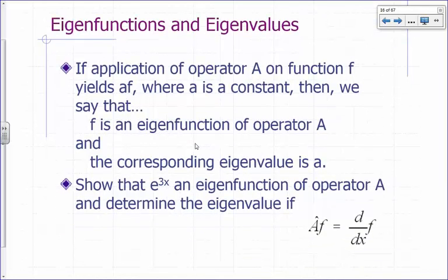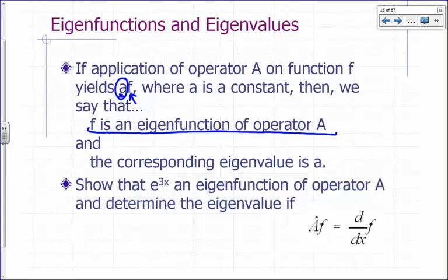Let's move on to eigenfunctions and eigenvalues. If the application of operator A on a function F yields a constant times the original function, then we say that this function F is an eigenfunction of operator A. This constant that comes out is called the eigenvalue corresponding to that eigenfunction. So for every eigenfunction, there's a corresponding number called the eigenvalue — the number that comes out when you operate on the eigenfunction.